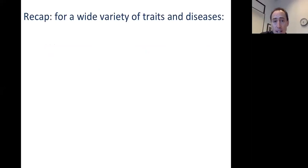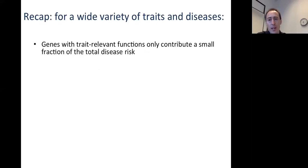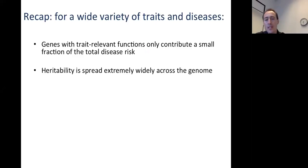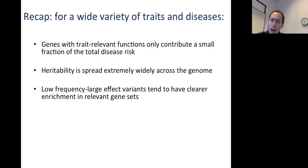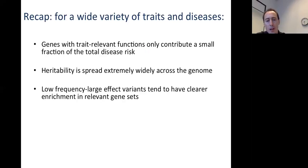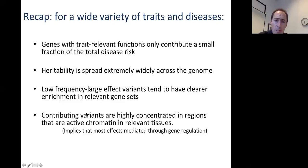To recap: for a wide variety of traits and diseases, genes with trait-relevant functions only contribute a small fraction of total disease risk. The heritability tends to be spread very widely across the genome. From a number of studies, it's apparent that low-frequency, large-effect variants tend to show clearer enrichment in relevant gene sets than common variants of small effect, even though these contribute only a small fraction of total heritability. Lastly, the contributing variants tend to be highly concentrated in regions that are active chromatin in relevant tissues — implying that most heritability for typical traits is mediated through gene regulation.